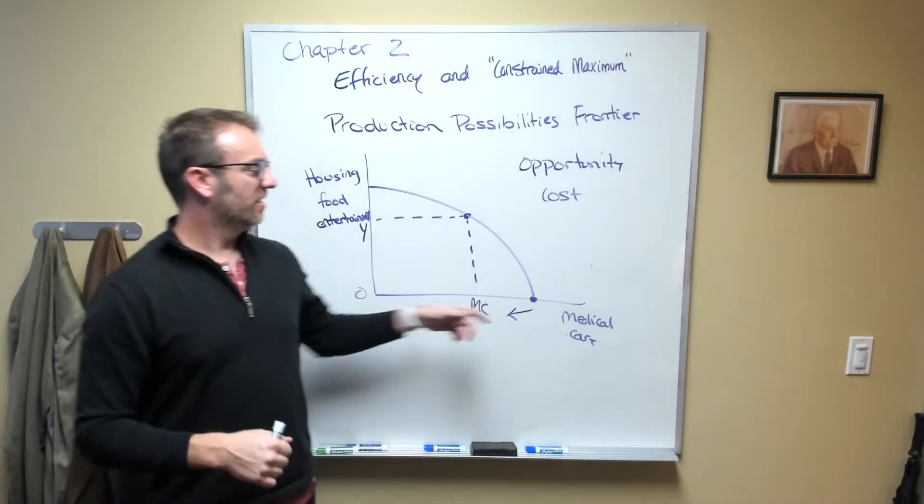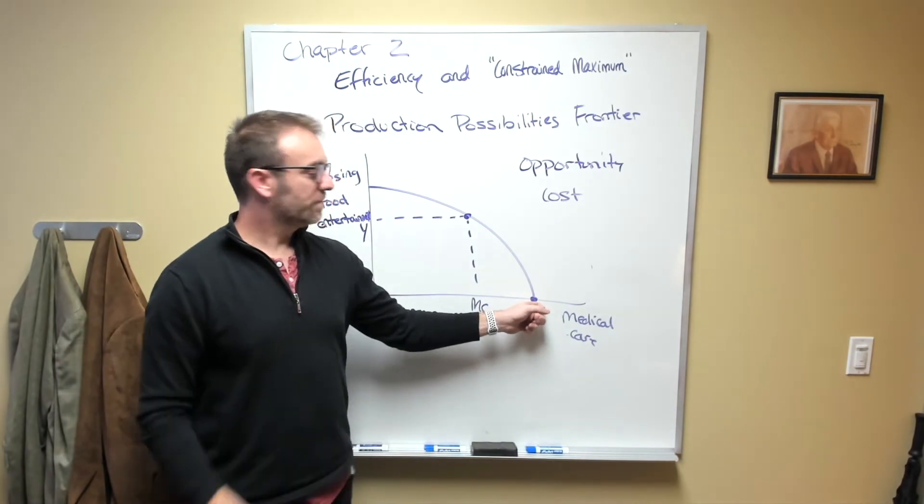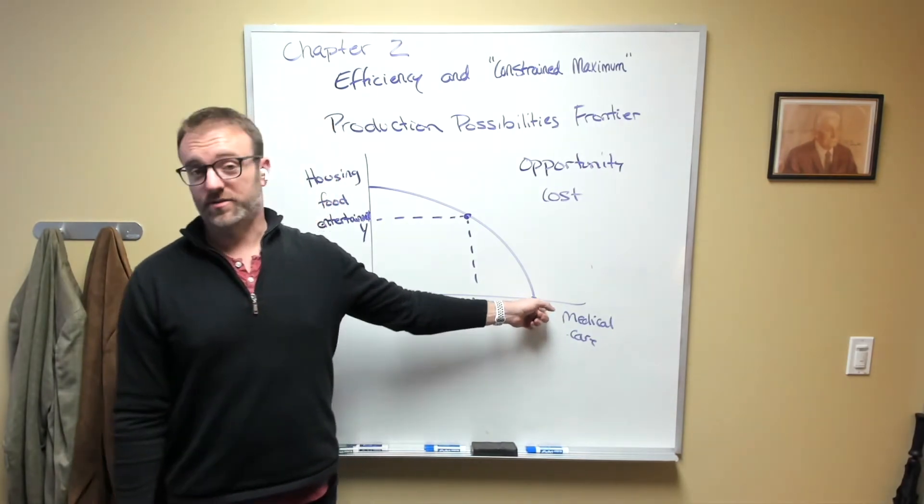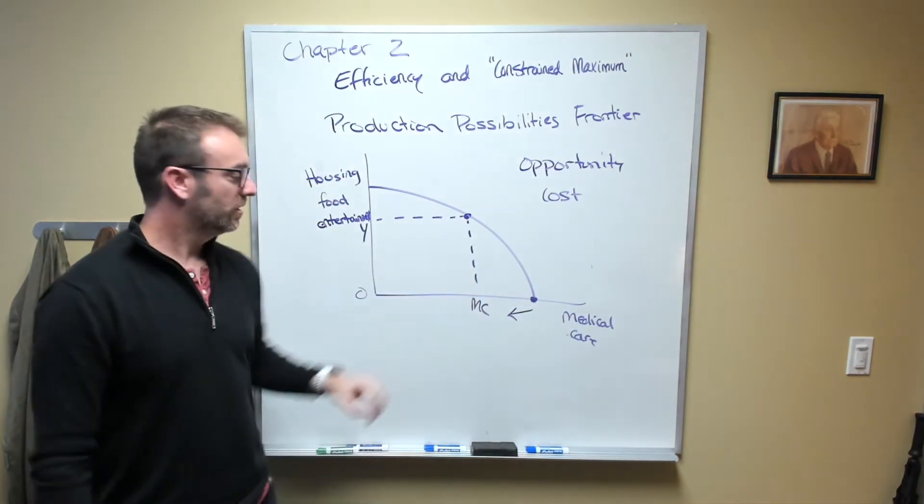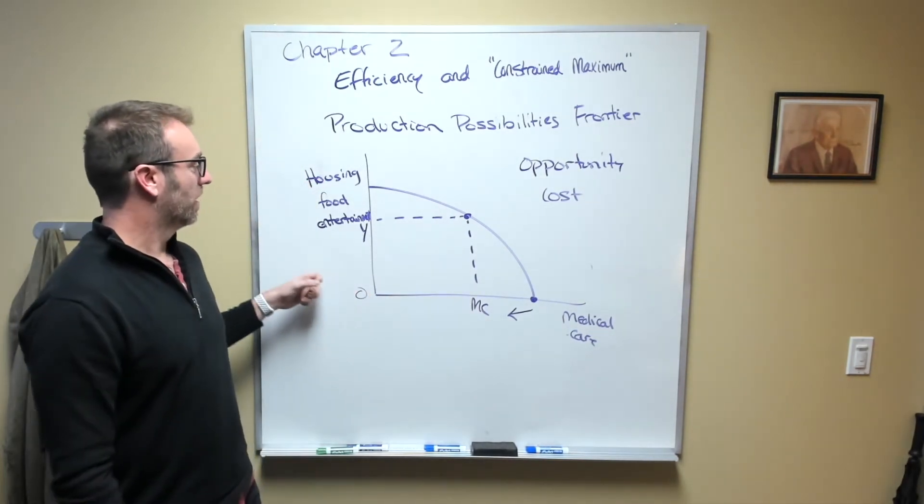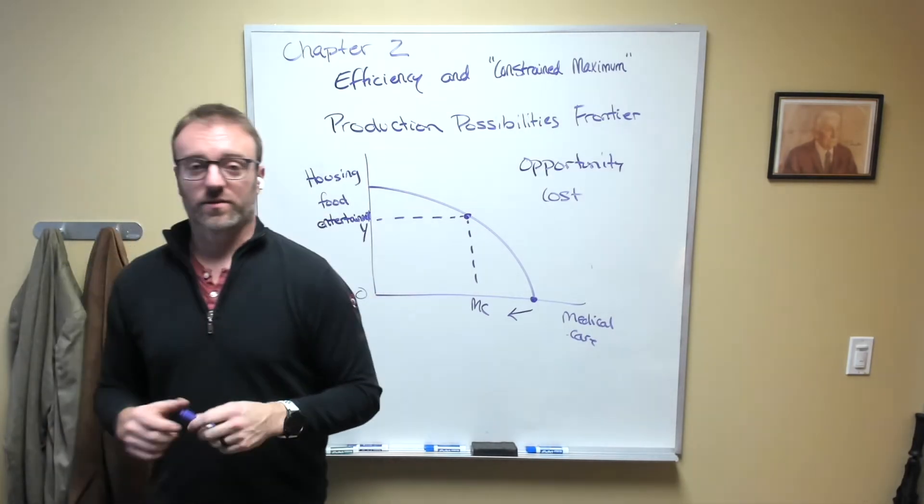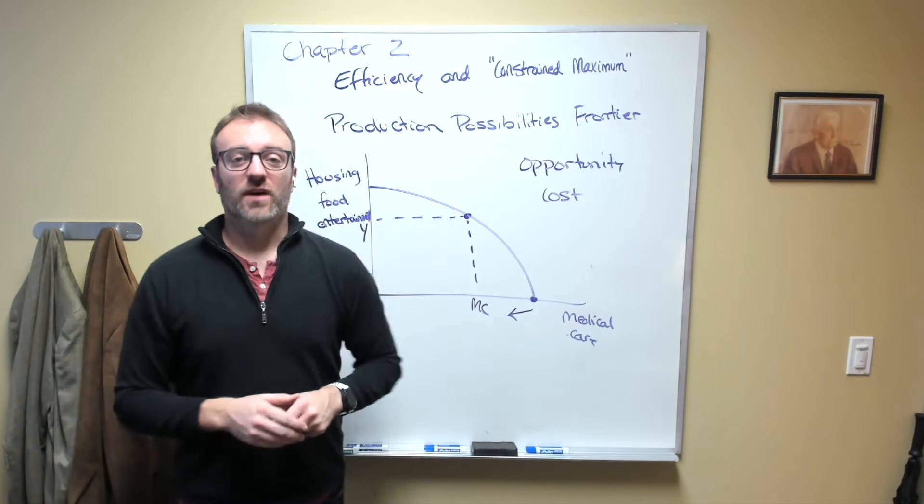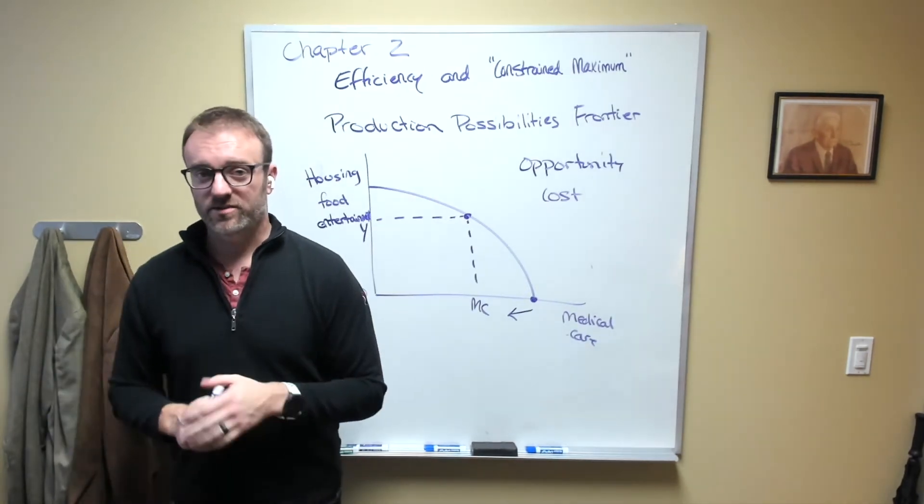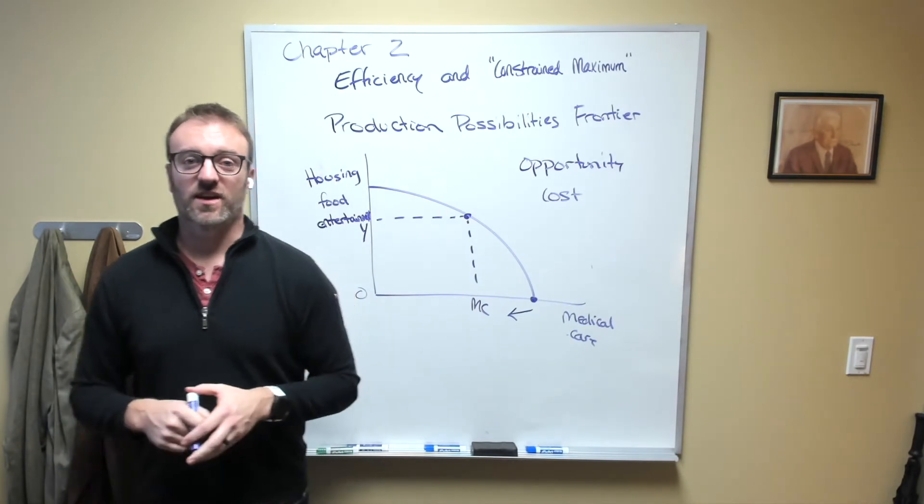What we want to do is evaluate this trade-off here where we go from having 100% of us providing medical care and zero percent of us providing food and other things, to having somewhere less than 100% of us providing medical care but having much more access to housing, food, and the other things. A common example of this is to point to the differences between the United States and the former Soviet Union.